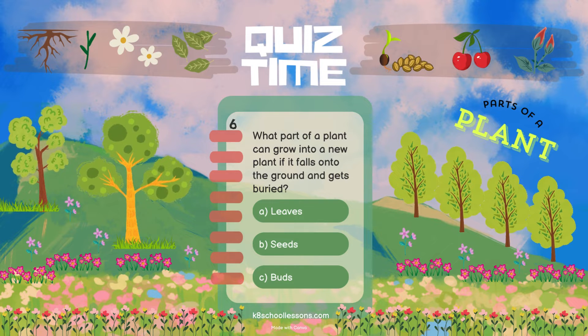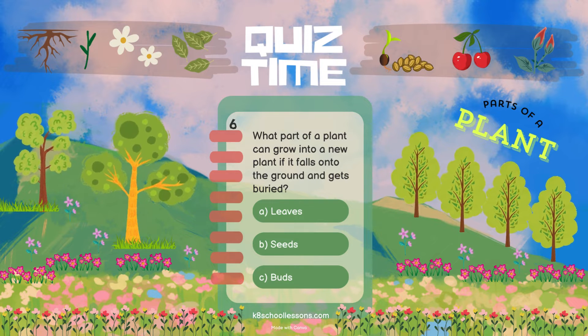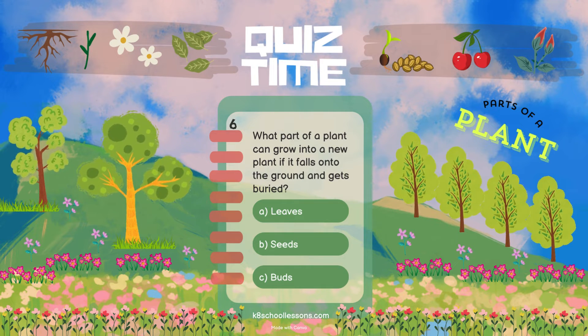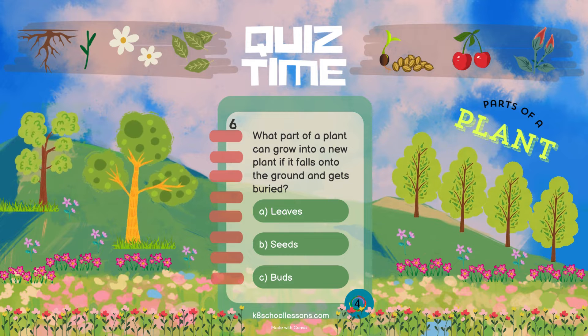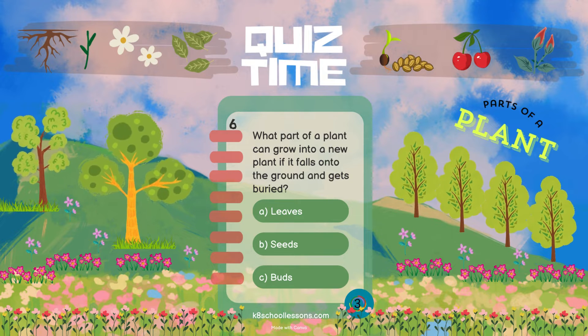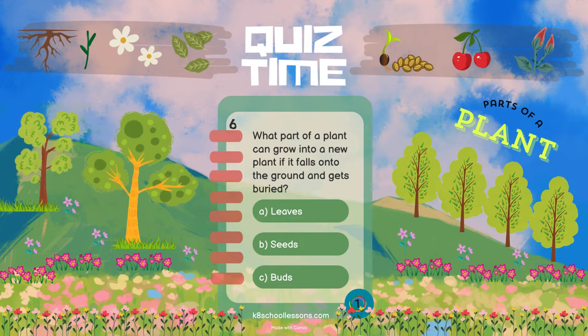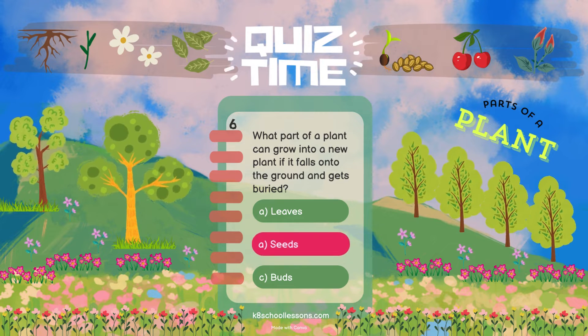What part of a plant can grow into a new plant if it falls onto the ground and gets buried? Seeds.